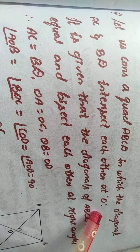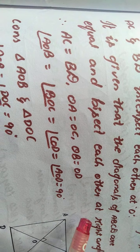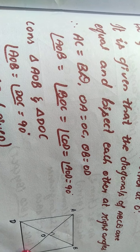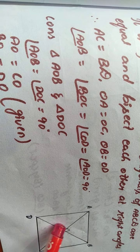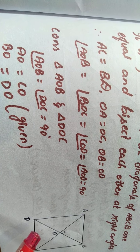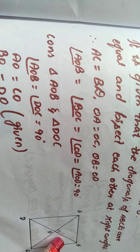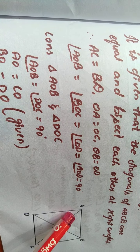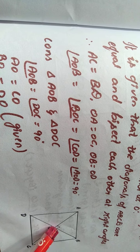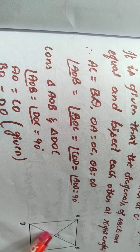So the given conditions I am writing first: AC and BD are intersected at O, and it is given that AC equals BD. Since it is bisected, OA equals OC, OD equals OB, and all the angles at O are 90 degrees. Now I am going to consider triangle AOB and triangle DOC in order to prove the opposite sides of the quadrilateral are equal. I know OA equals OC and OB equals OD.